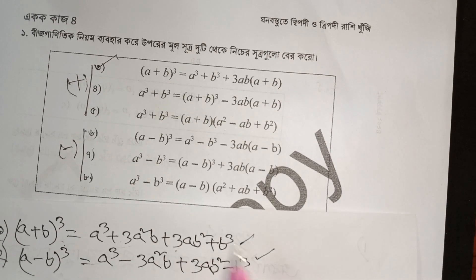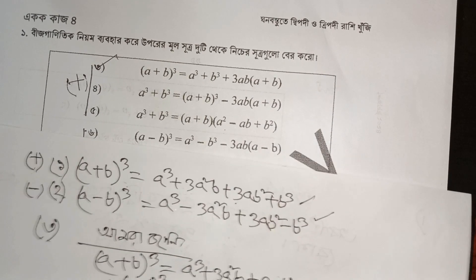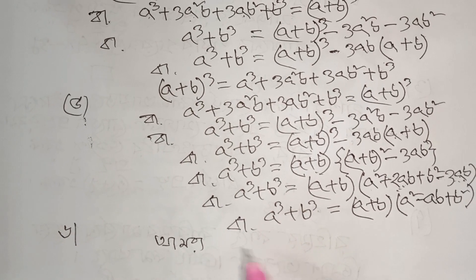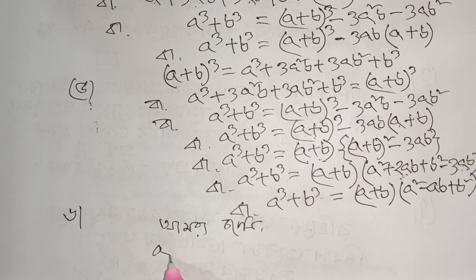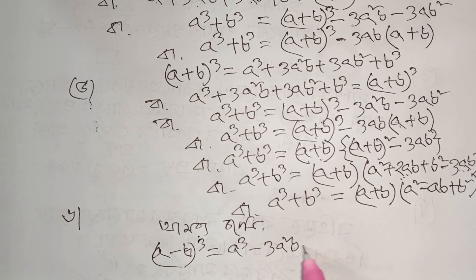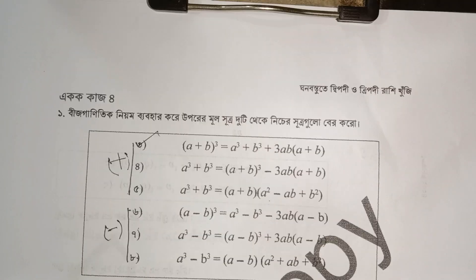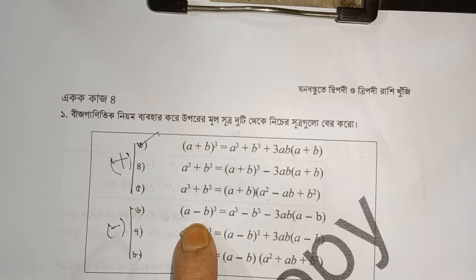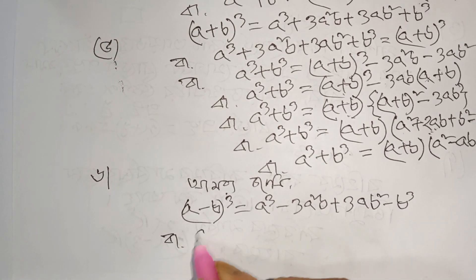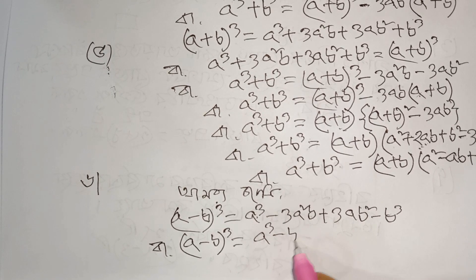So this is a cube plus b cube equals a plus b into a square minus ab plus b square. This is the sixth number formula. The result of the three hundredths is minus one hundredth. So this is a cube minus 3a square b plus 3ab square minus b cube — this is the sixth number formula. So this is a minus b whole cube, and this is a cube minus b cube.